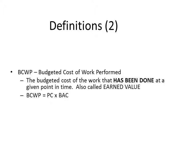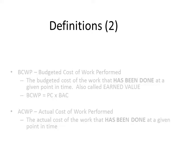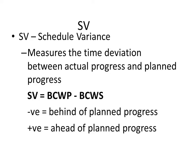Budgeted Cost of Work Performed (BCWP) is the budgeted cost of the work that has been done at any given point in time, also referred to as earned value. The formula used is: percentage complete multiplied by budgeted cost at completion. Actual Cost of Work Performed (ACWP) is the actual money that has been spent at any given point in time.